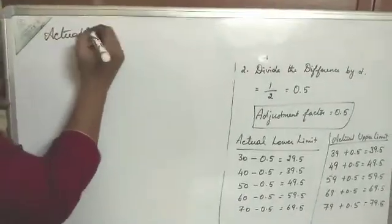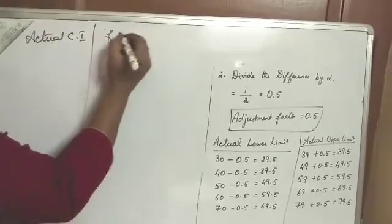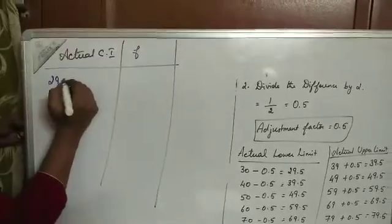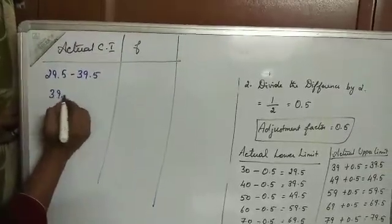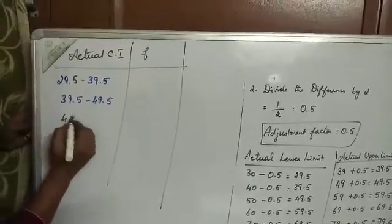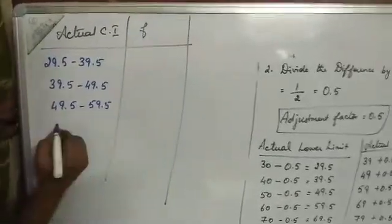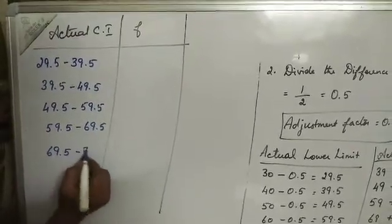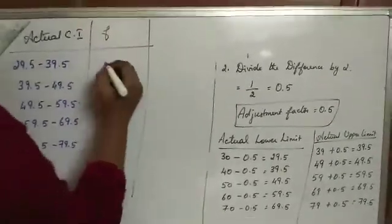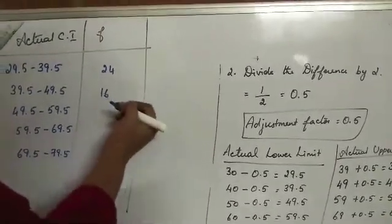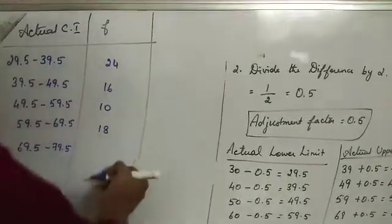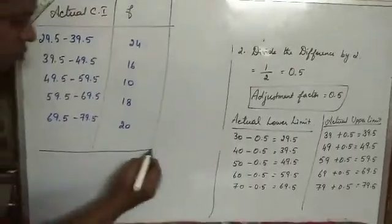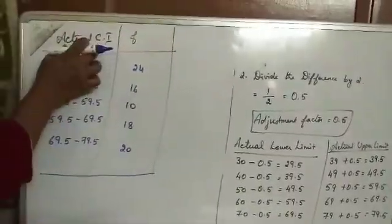Actual class interval and frequency. And the frequency is 24, 16, 10, 18 and 20. So we have to draw the histogram for this actual class interval and the frequencies.